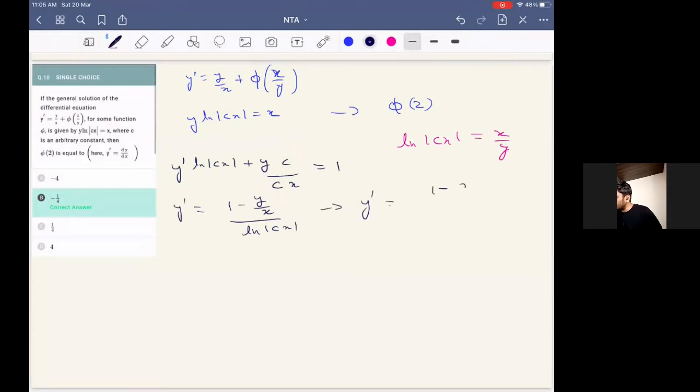Now putting these values, we will get y dash will be equal to one minus y by x. So upon further simplification, we are going to get y dash will be equal to x minus y by x squared into y.